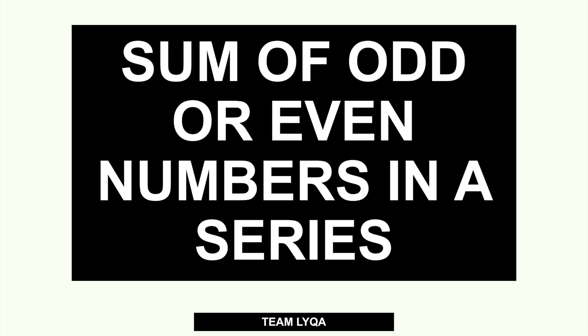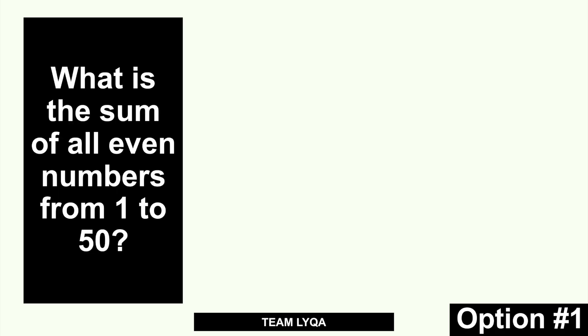So the same as before, I'm going to give you a few options. Option 1: what is the sum of all even numbers from 1 to 50? What you could do is list all of them. The rule for even numbers is they end with 0, 2, 4, 6, or 8. So starting from 2, you list: 2, 4, 6, 8, 10, 12, 14, 16, 18, 20 — and continue all the way to 50.